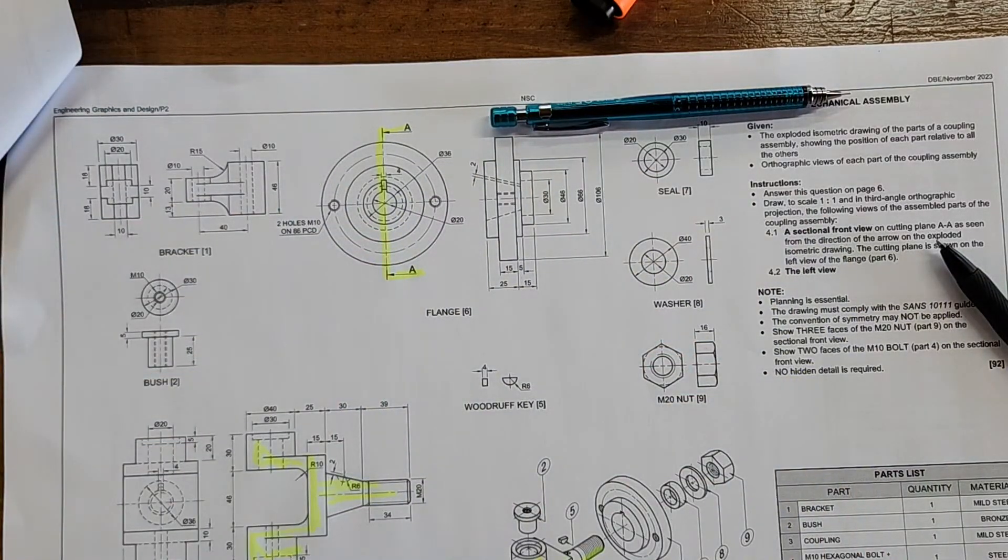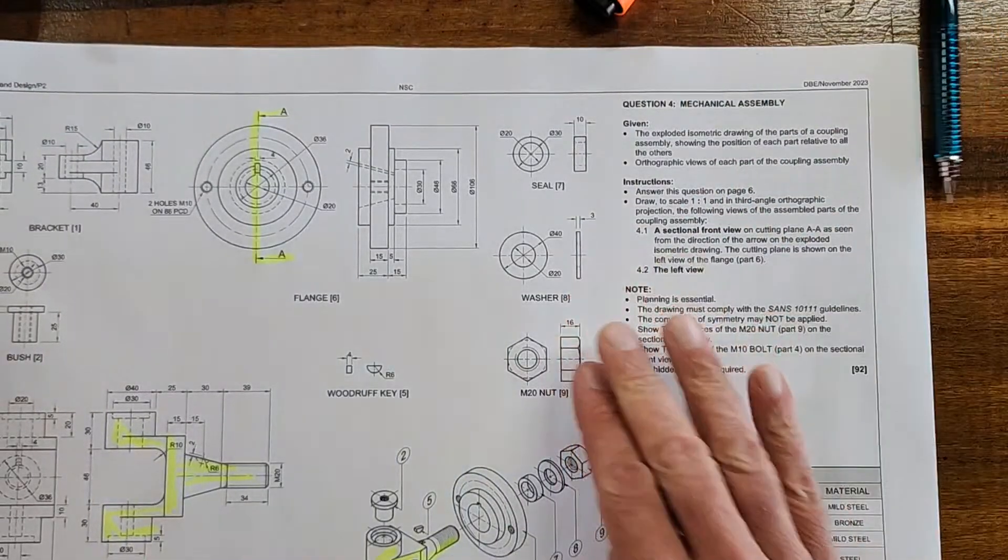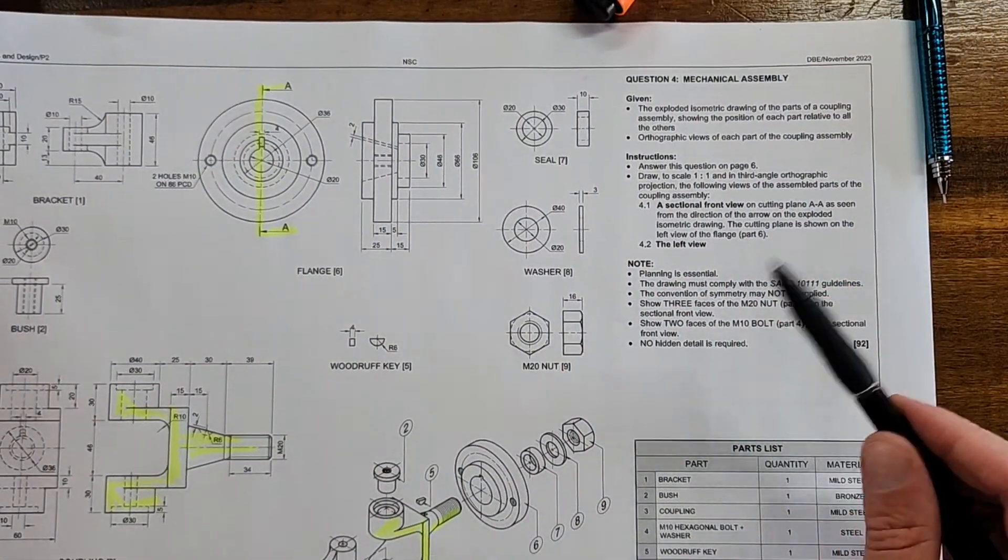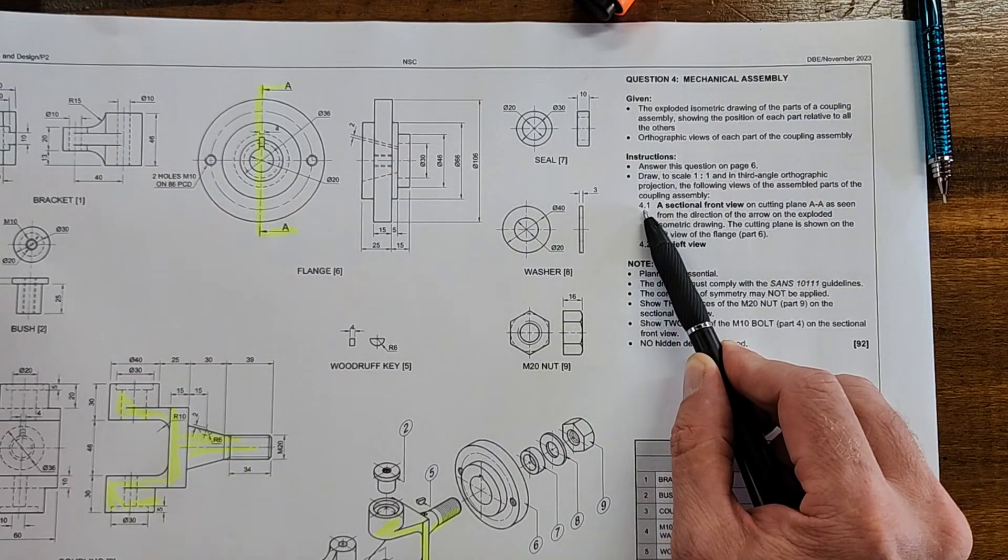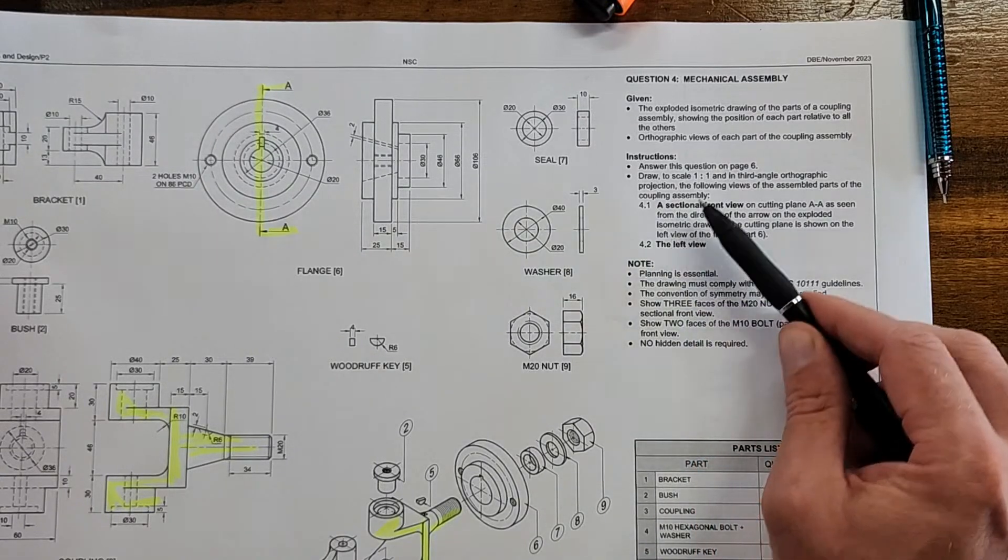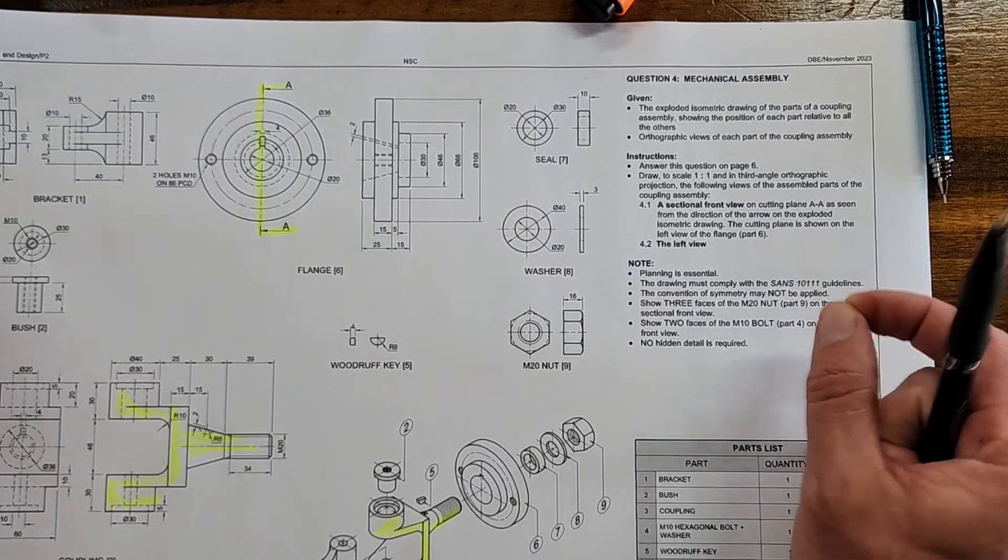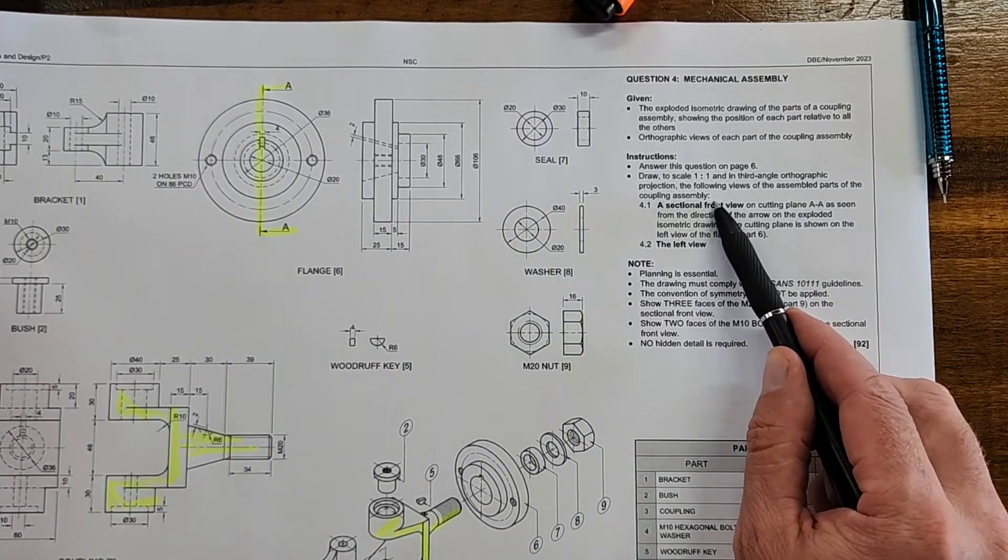There are two things here before I will draw this with the EGD Master Class series. But just before I end this video, a big tip: they're asking this one, 4.1, a sectional front view and a left view. Pay attention to which one is asked as the sectional view. And I do want to say I've had, I think 2021, you know what they did? They only asked a sectional front view.